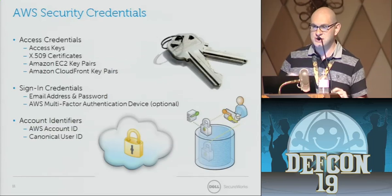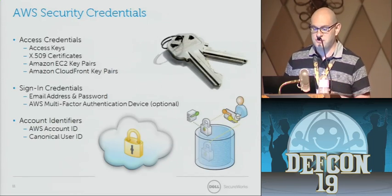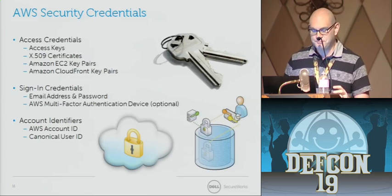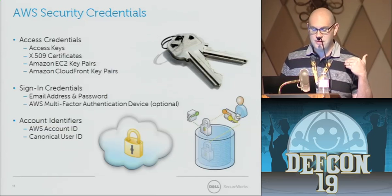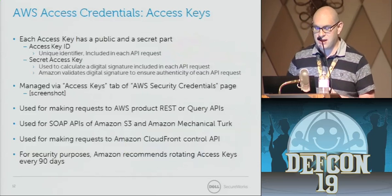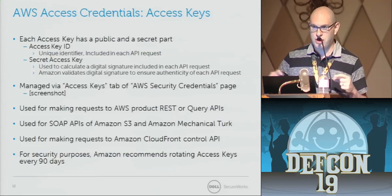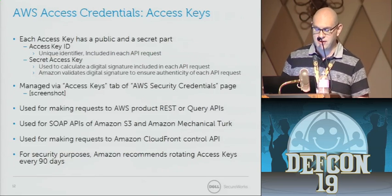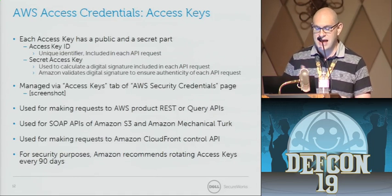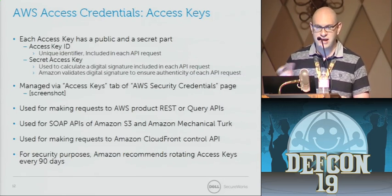S3, or Simple Storage Service, is the object storage that Amazon offers its customers. You use what's known as buckets and read and write data into those buckets as objects. A more recent addition is the Elastic Block Store — EBS — a virtualized block device. Just like on a Unix or Linux system, you can mount a block device and read and write to it like a file system. EBS is a cloud block device that you can mount on your images.